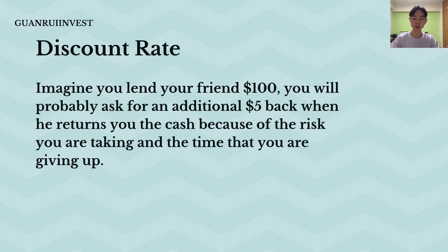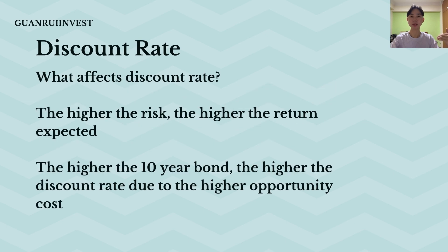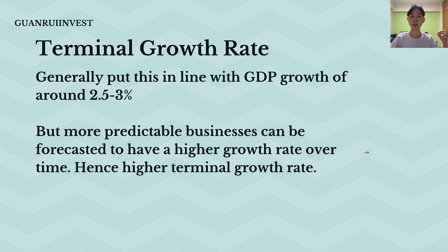The next component is your discount rate. Imagine you lend a friend $100 — you'd ask for an additional $5 back because you're taking on time risk and the risk of lending. It's the same for investments: you want a required rate of return. The higher the risk of the company, the higher the discount rate you want. Also, the higher the 10-year bond yield, the higher the discount rate due to opportunity cost.